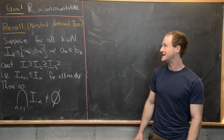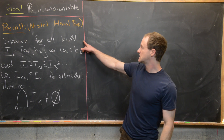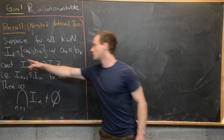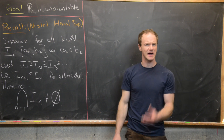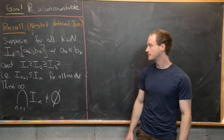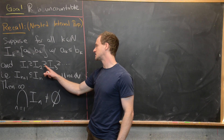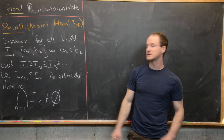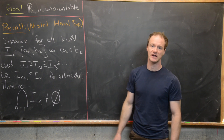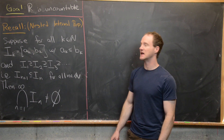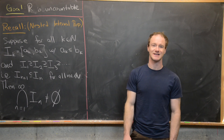We're going to do that by way of this thing called the nested interval property, which we proved a couple of videos ago. So suppose for all natural numbers K, we have a closed interval I_K going from A_K to B_K, where A_K is less than or equal to B_K — so this is a non-empty interval. We have this nesting: I_1 contains I_2, contains I_3, and so on, which we can write as I_{N+1} is contained within I_N for all natural numbers N. The conclusion is that the intersection over all of these closed intervals is non-empty.